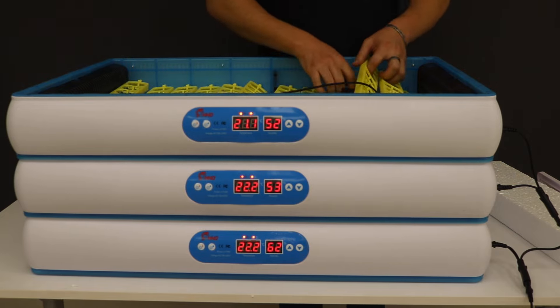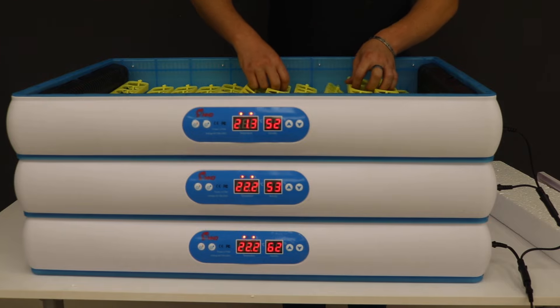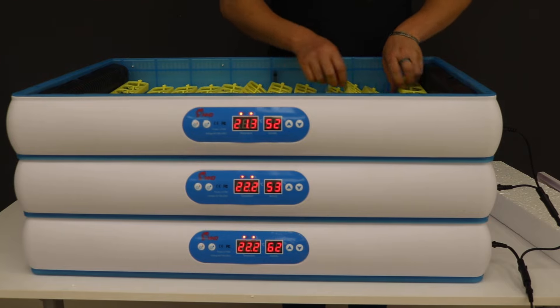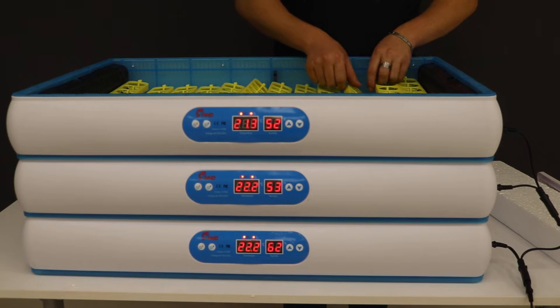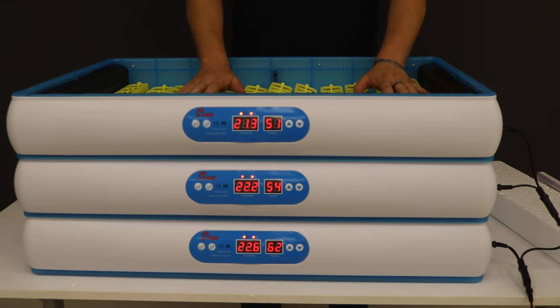And then these trays will turn every two hours for you. So all you need to do is place your eggs in, add your water and let the machine do the rest. These eggs will roll in these trays for you for 18 days.